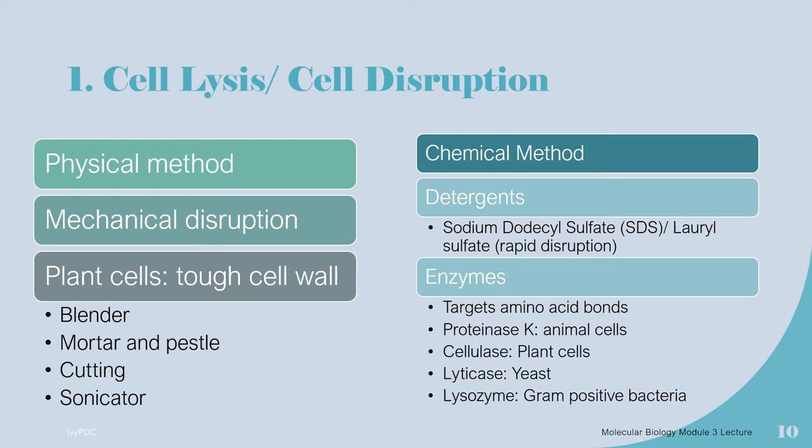Examples of enzymes used in the first step are: proteinase K, which is used for animal cells that are rich in proteins; cellulase, which is used for plant cells to degrade the cellular components, primarily cellulose; lyticase, which may be used for yeast; and for gram-positive organisms, we can use lysozyme.